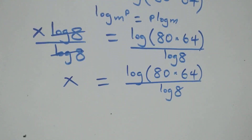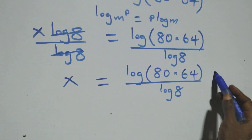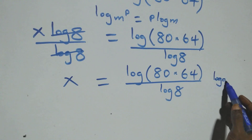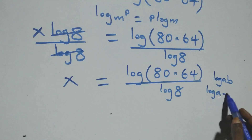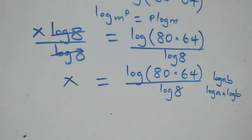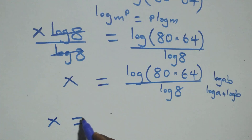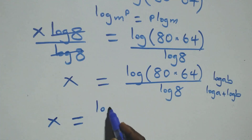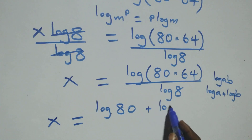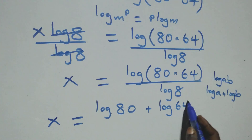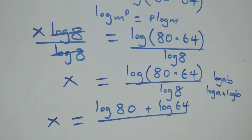This follows the logarithm product rule. When we have log of a times b, this is the same thing as log a plus log b. So we have x equals log 80 plus log 64, all over log 8.